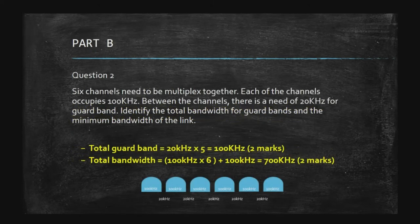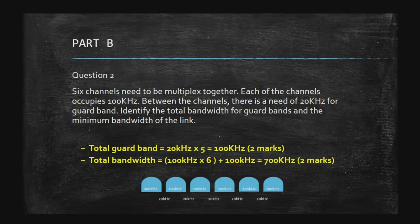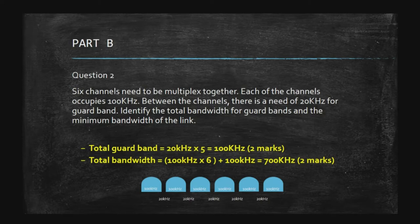Question number two: we have six channels that we need to multiplex. Each channel occupies 100 kilohertz, and between channels there is a need of 20 kilohertz for a guard band. Identify the total bandwidth for guard bands and the minimum bandwidth of the link. We need the guard band to avoid interference between signals coming from several channels.